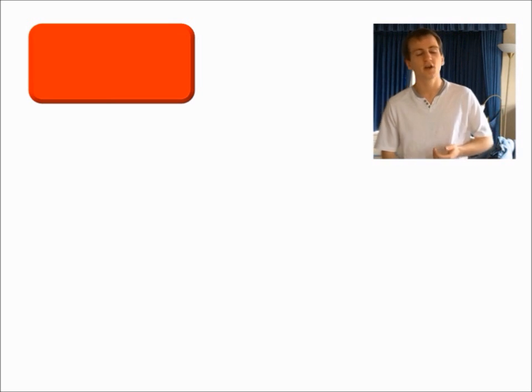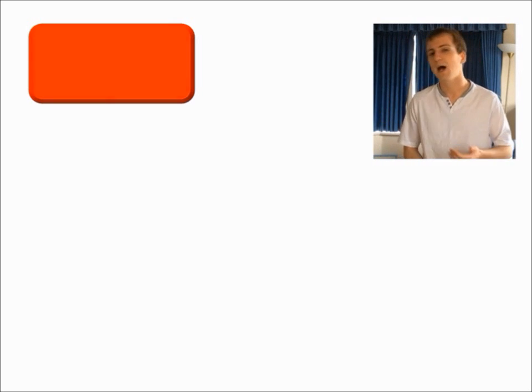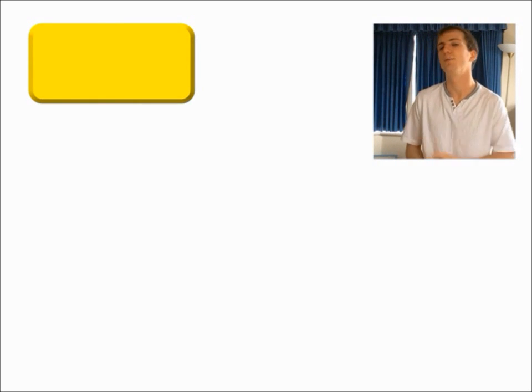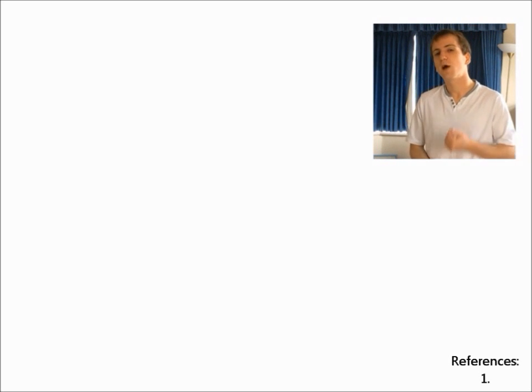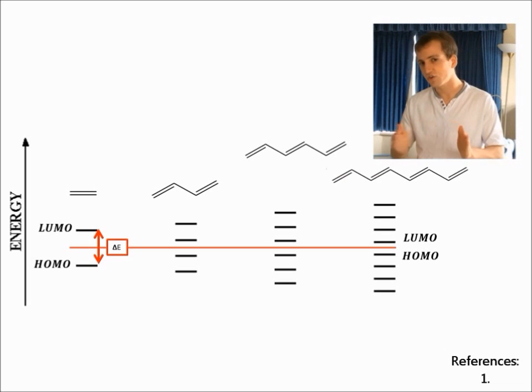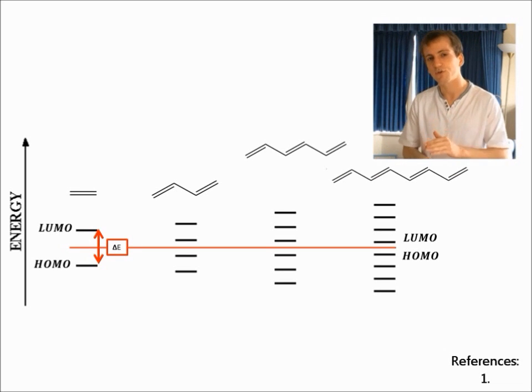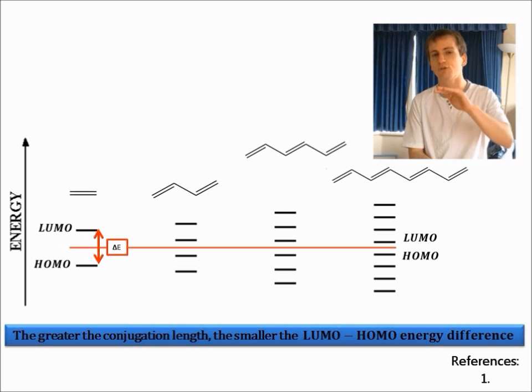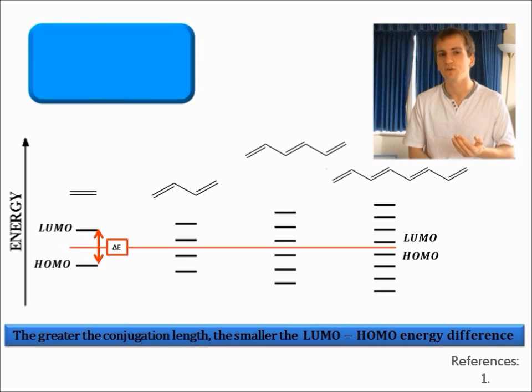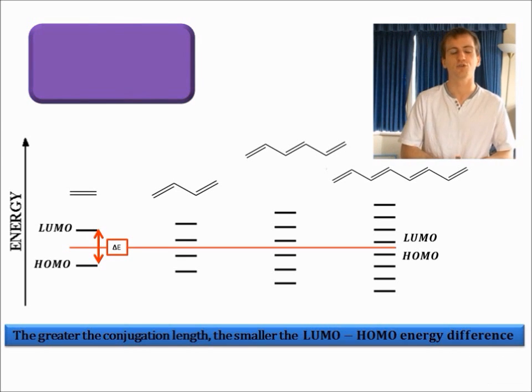So we have access to the colours yellow, orange and red, but how do we gain access to the colours blue and purple? One of the ways we can do this is by restricting the conjugation length we allow our polymer to have. The longer the conjugation length, the smaller the energy difference, delta E, between the HOMO and the LUMO. So if we can restrict the conjugation length, we're going to be increasing the energy difference between our HOMO and the LUMO, giving us access to higher energy photons, the blue and purple end of the electromagnetic spectrum.